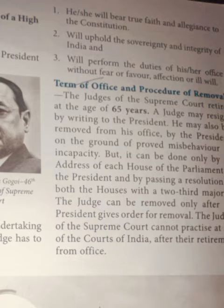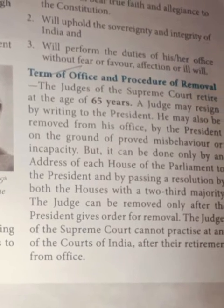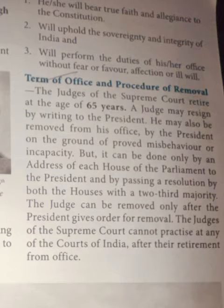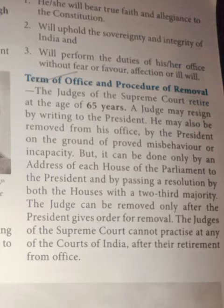Term of office: A judge of the Supreme Court retires at the age of 65 years. A judge may resign by writing to the President. He may also be removed from his office by the President on the grounds of proved misbehavior or incompetency. But this can be done only by an address of each house of Parliament to the President, and only when a two-thirds majority resolution is passed against the judge.